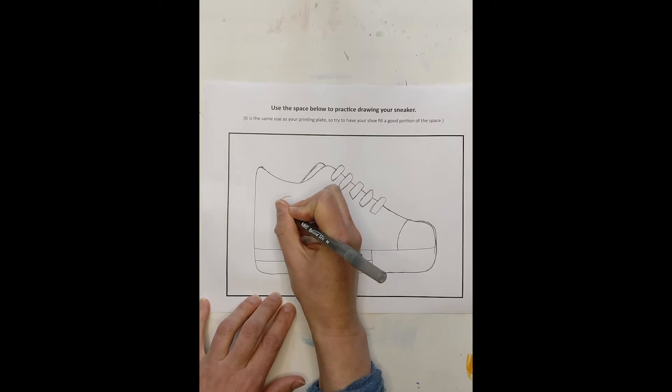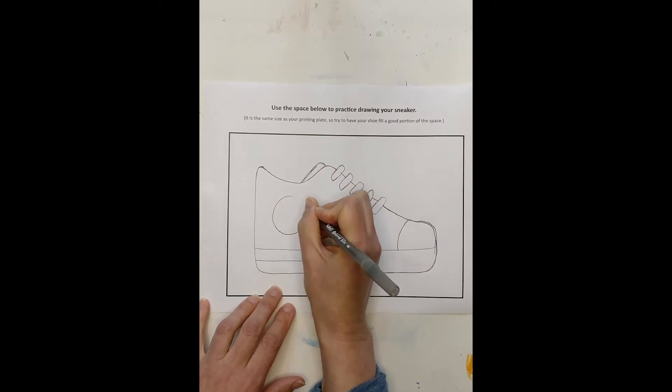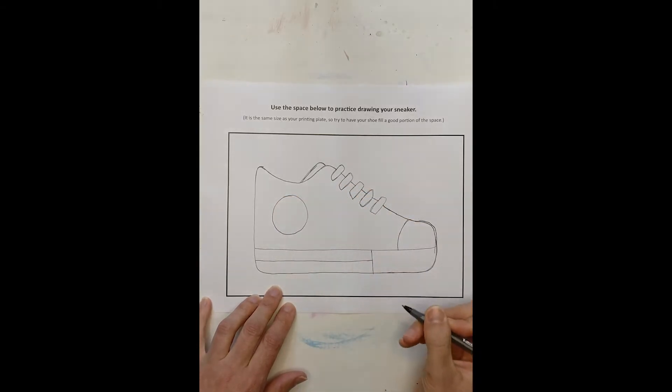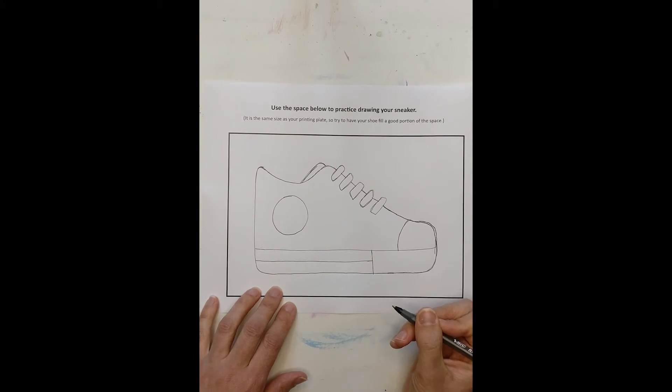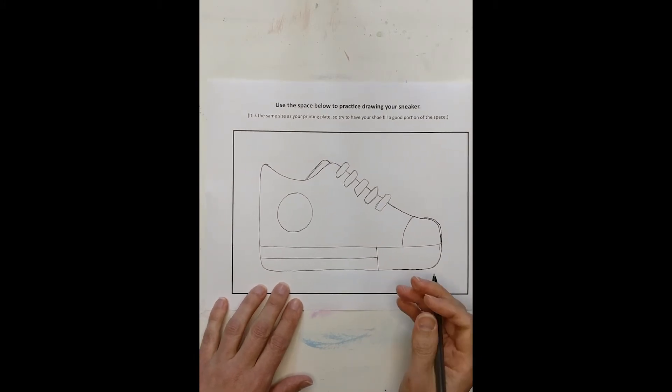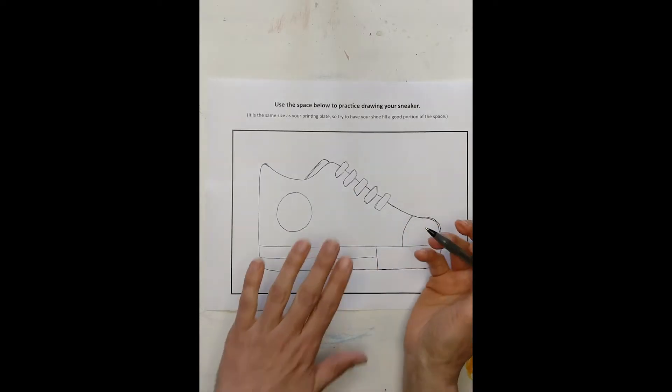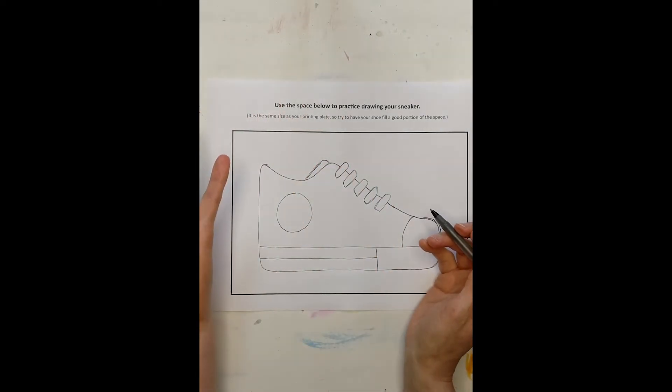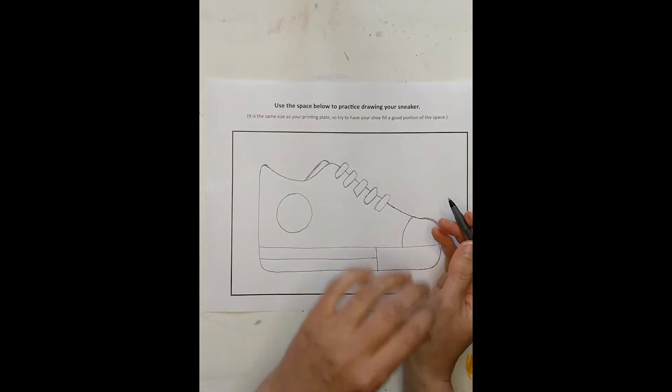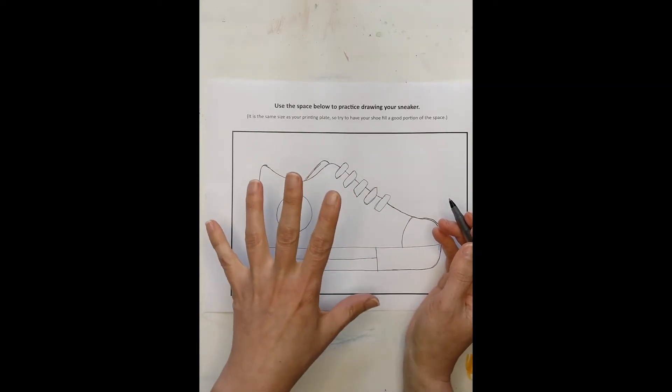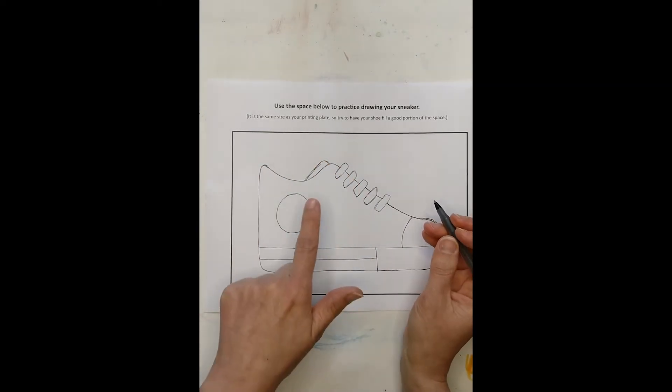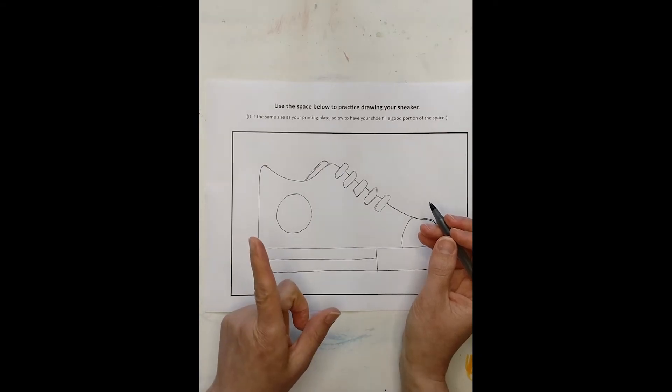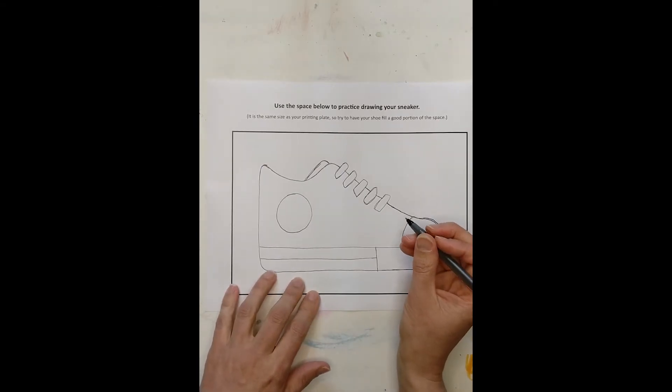And I'll do the circle here. Now, if you're doing a shoe and you think, I want to write letters, know that when you're printing, what you draw and what you put on the plate will end up printing a mirror image. It'll be in reverse. So if you want to, for example, write Converse or Nike or any certain brand, you'll need to draw those letters backwards. So that's just something to think about.